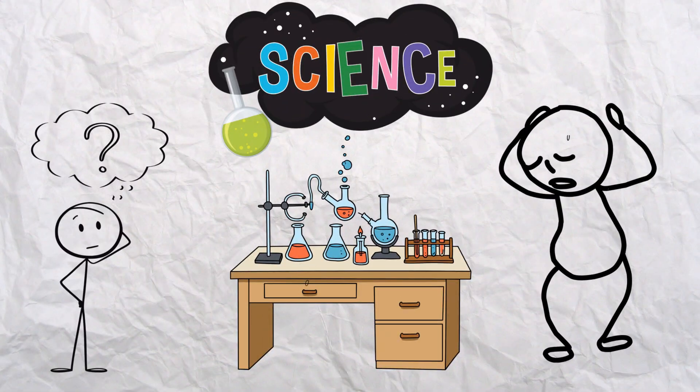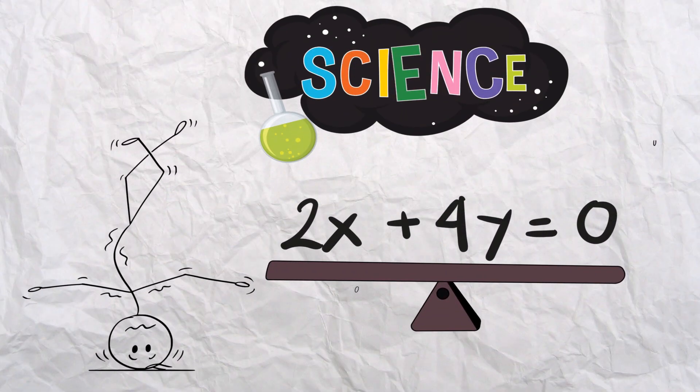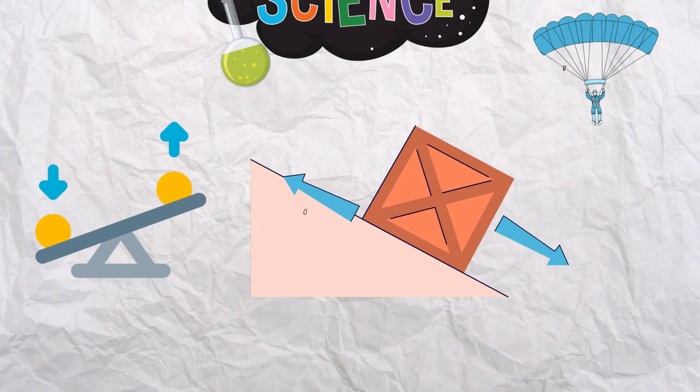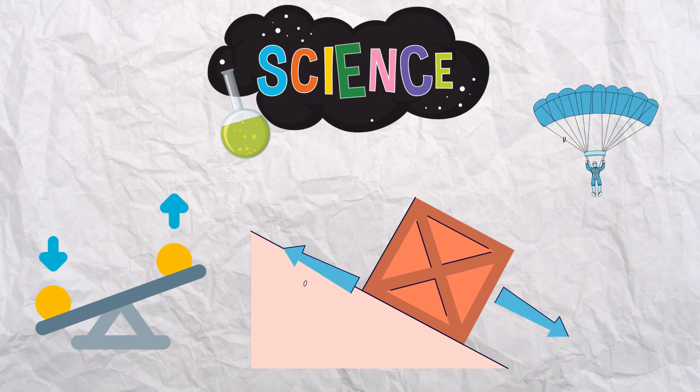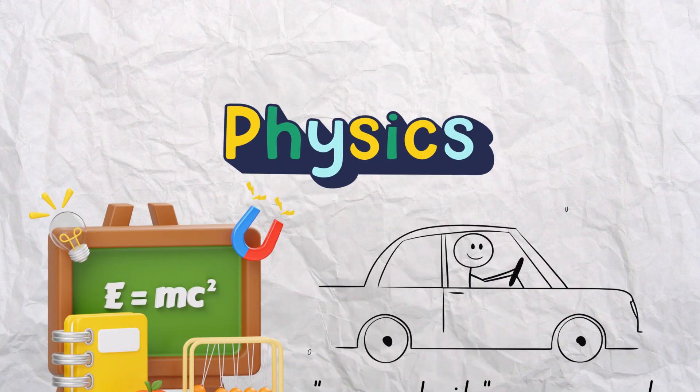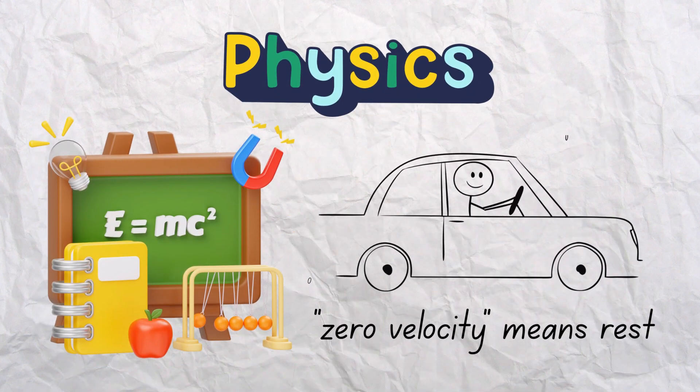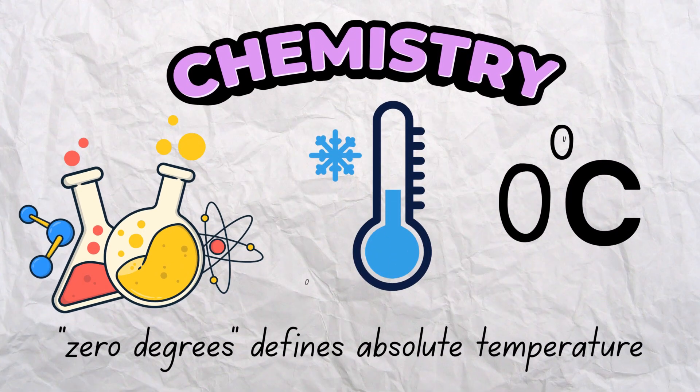Let's go deeper into science. Zero allows equations to balance, forces to cancel, and motion to pause. In physics, zero velocity means rest. In chemistry, zero degrees defines absolute temperature, the coldest possible state.